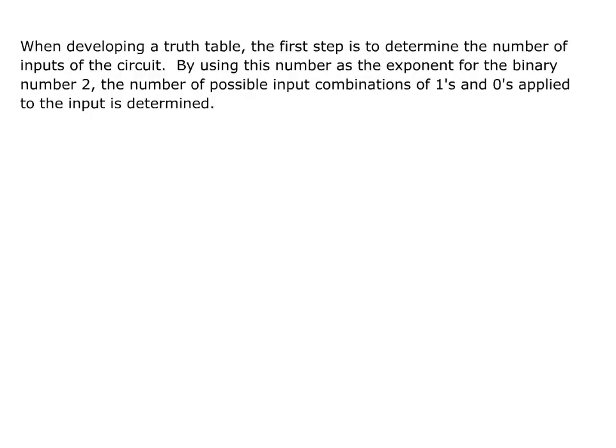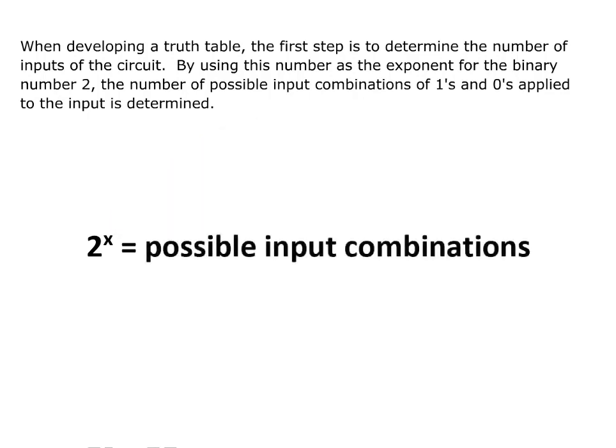When developing a truth table, the first step is to determine the number of inputs of the circuit. By using this number as the exponent for the binary number 2, the number of possible input combinations of 1s and 0s applied to the input is determined.